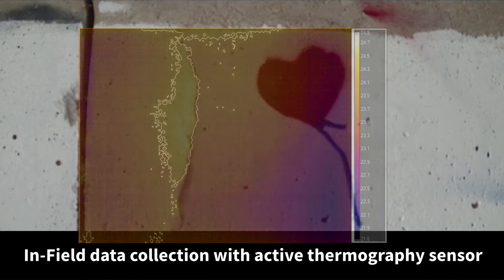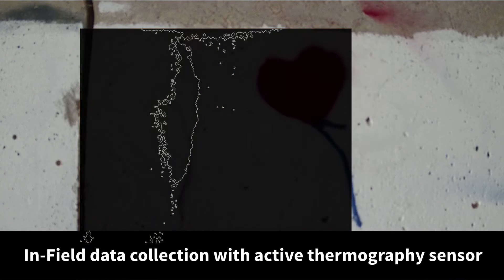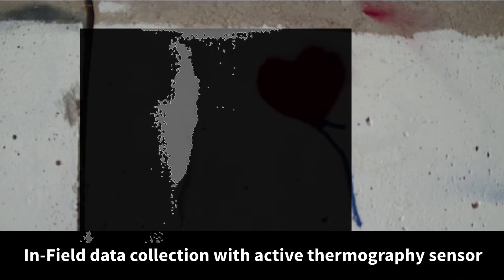A little bit of computer post-processing allows us to reveal exactly where that is and map it in images that engineers and decision makers can use to determine exactly how to repair it.